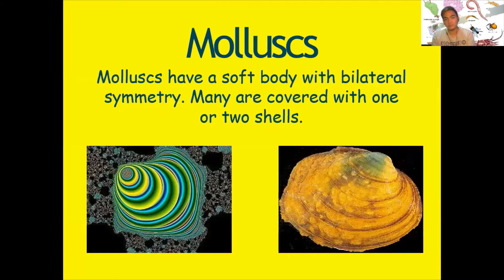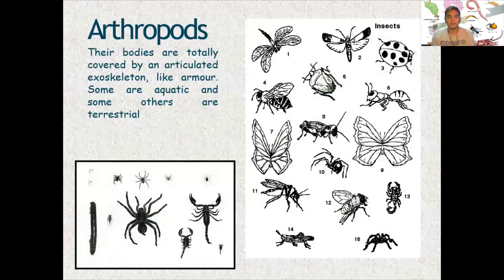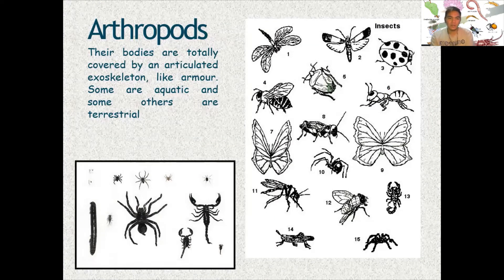Mollusks have a soft body with bilateral symmetry, and many are covered with one or two shells. Arthropods have bodies totally covered by an articulated exoskeleton. Some are aquatic and some others are terrestrial.